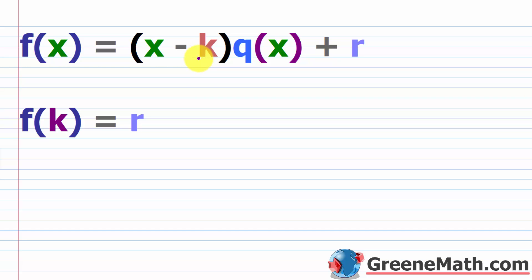Now, if I divide f of x by x minus k, the result will be some quotient, which we call q of x, plus some remainder, which we call r. So we can rewrite our polynomial function f of x in this way. Let me give you a quick example with some whole numbers so that it makes more sense.